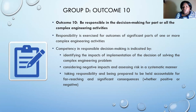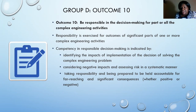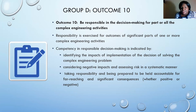Outcome 9 is more related to Outcomes 1, 2, and 3, while Outcome 10 is more related to Outcomes 4, 6, and 7. For Outcome 10, indicate what decisions you were making in part or all of the complex engineering activity, that you took responsibility for certain outcomes or parts of that activity, that you identified the impacts of decisions or solutions, considered negative impacts, assessed risk systematically, and can be held accountable for far-reaching and significant consequences.